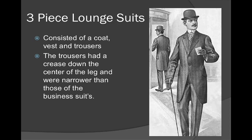We're going to move into men's fashion now. The silhouette for men stayed a rectangle. They wore something known as a three-piece lounge suit — the vest, collar, and jacket stayed from the 1890s. Now they had a coat, a vest, and trousers. The trousers now have a crease down the center of the leg and are narrower than those of past business suits. Men's trousers still have that crease today — it's something that never went away.